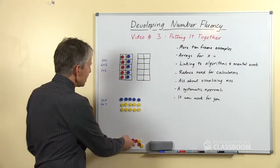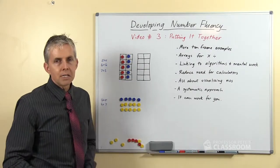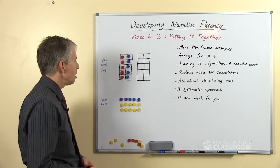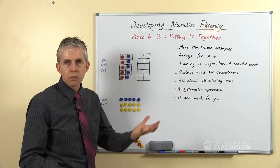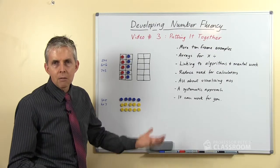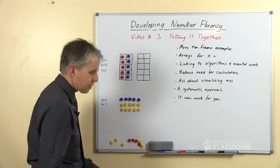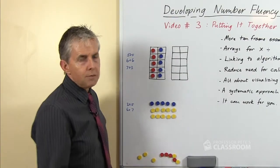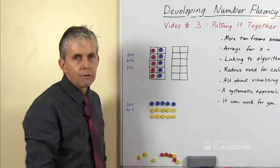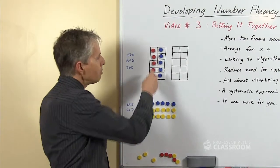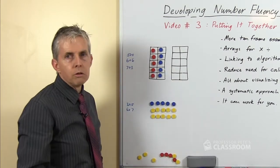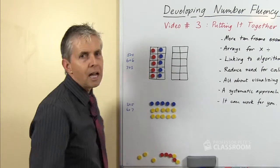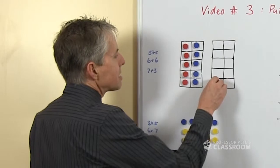So here's another example. Using 10 frames is recommended for any early number work with early year students, particularly for number facts but also for learning about teen numbers and regrouping and a wealth of topics at this level. So let's look at a doubles number fact. The beauty of the 10 frame is that because there are two rows of five squares, every double can be shown by a separate row of colored counters. If we use two colors we can see quite easily. Five plus five is a nice easy one.